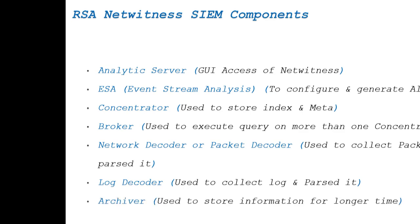The next component is the Archiver. The Archiver is used to store your data for a longer time period to comply with your organization's retention policy. There are two types of retention policies: online retention and offline retention. Online retention means you can use that data anytime for investigation, report generation, or alert configuration. Offline retention means you have taken a backup of the log and stored it elsewhere; to use it, you need to restore it from the offline location to the online location.